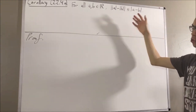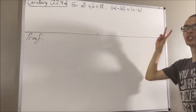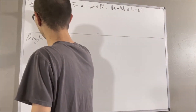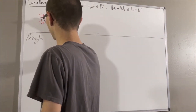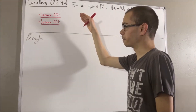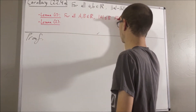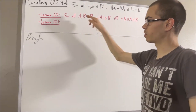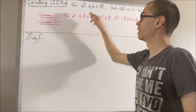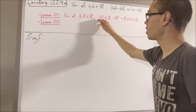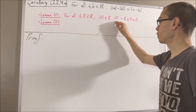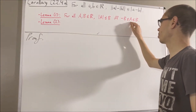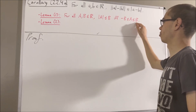In proving this corollary, we are going to rely on two preliminary results. Here's the first one: for every two real numbers a and b, the absolute value of a is less than or equal to b if and only if negative b is less than or equal to a is less than or equal to b.